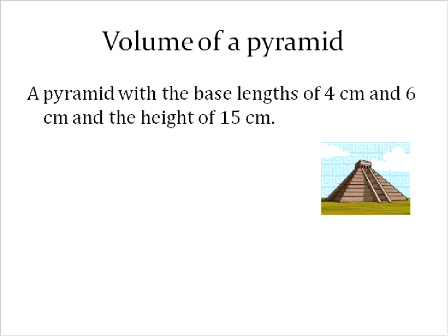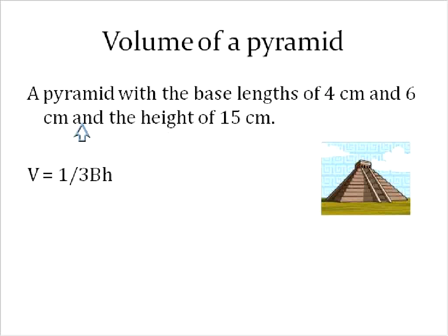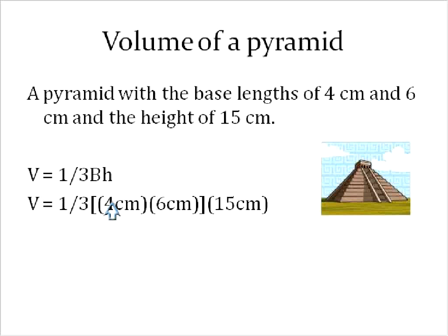The volume of a pyramid is a little bit more complicated, but here's the equation. The volume is equal to 1 third of the base times the height. The capital B is the area of the base. So in this question, we're told the base has a length of 4 centimeters and a width of 6 centimeters. So the base would be 4 times 6, and that will give us the area of the base — shown here inside brackets. The height would be 15 centimeters, and that's all multiplied by 1 third.